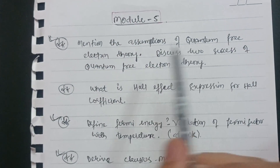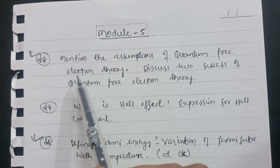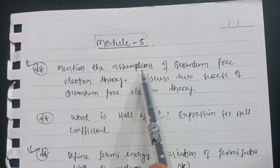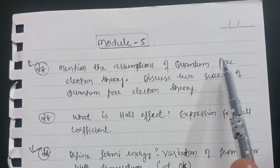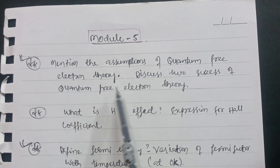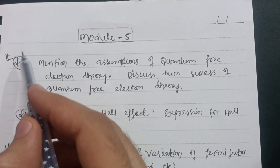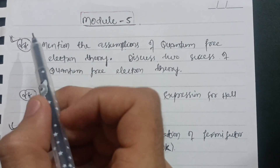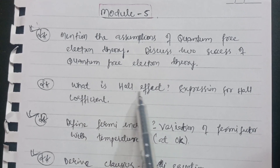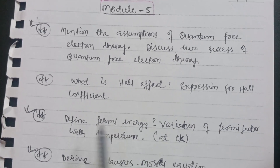In Module 5, for backlog students, cover one or two questions. The most important is: mention the assumptions of quantum free electron theory and discuss two of its successes. This question is asked almost every exam. Also cover: what is the Hall effect and derive the expression for the Hall coefficient.